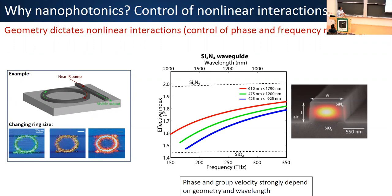What I'm plotting here is something called the effective index, which is related to the propagation constant of light going through one of these waveguides. This propagation constant is highly dispersive as a function of wavelength and frequency, as well as a function of geometry. These different geometries vary by just a few tens of nanometers, but the effective index varies very strongly, giving us a knob to compensate for the intrinsic material dispersion of the films we use.